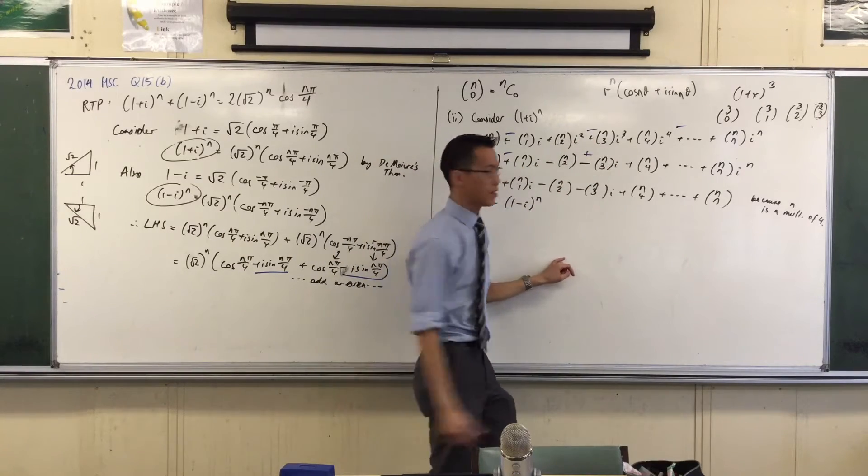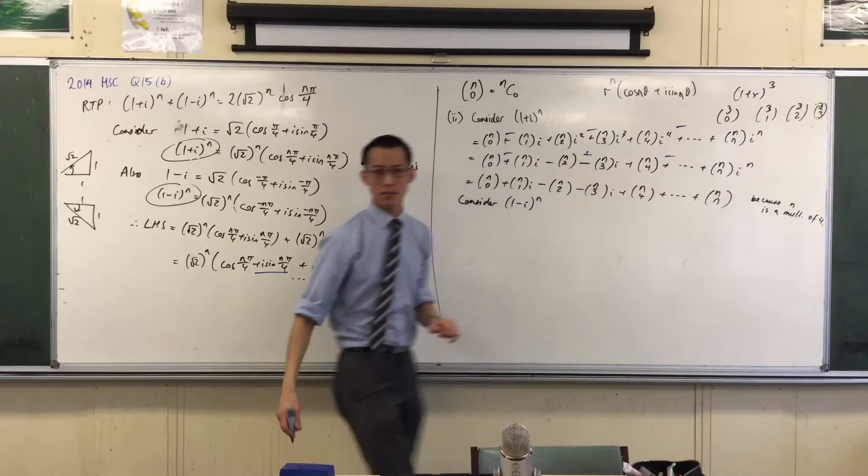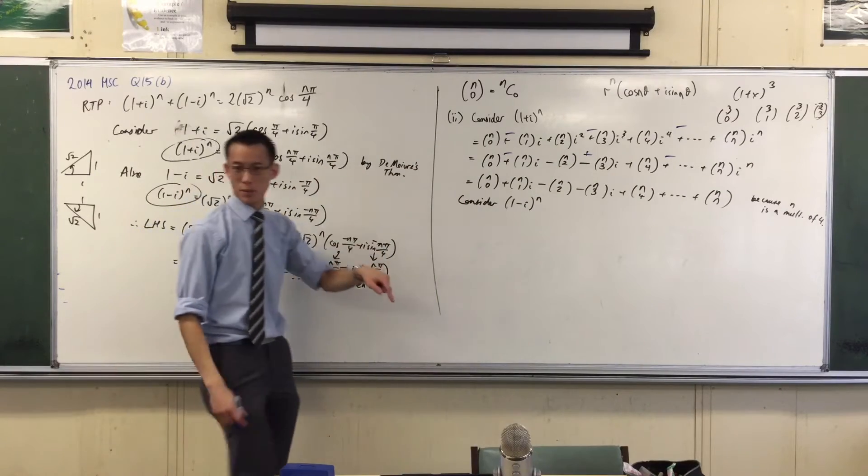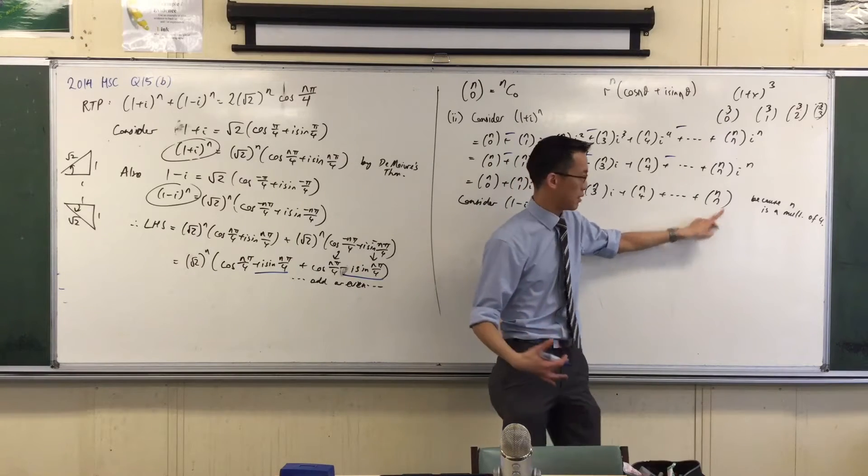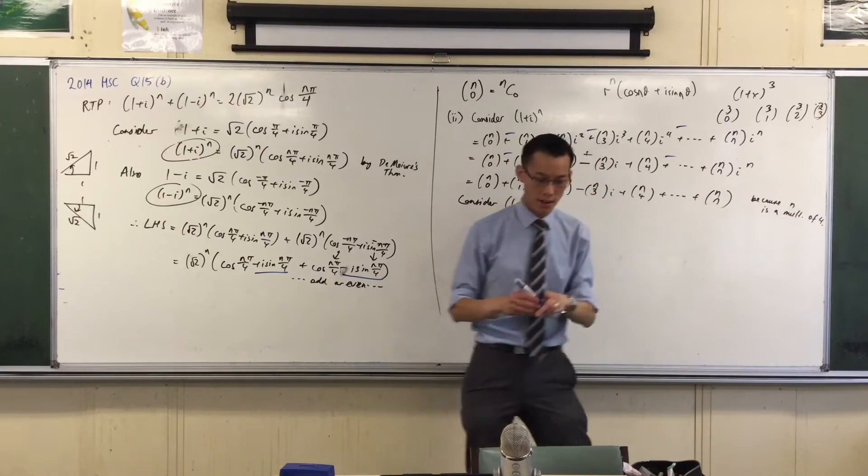So this is going to become plus, and then this one's going to become minus, right? And then everything else will be the same. For the same reason that I noticed before, the last term will still be nn, because this is still true. Do you agree with that?